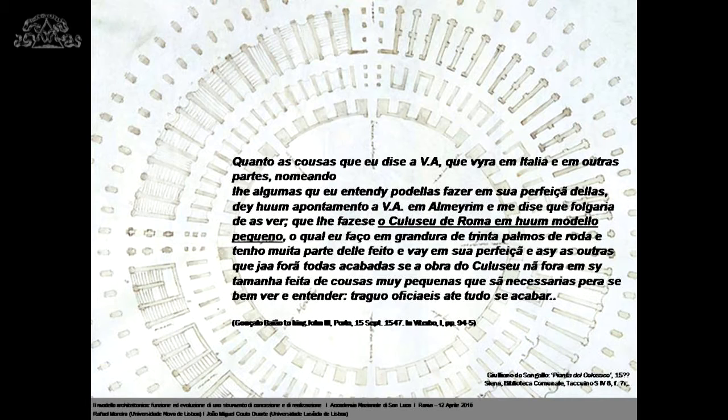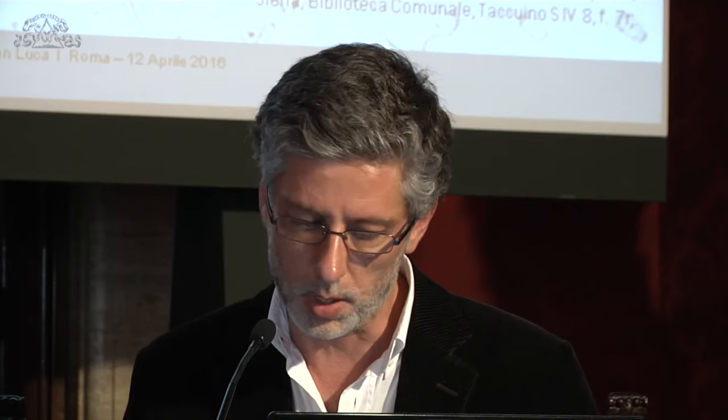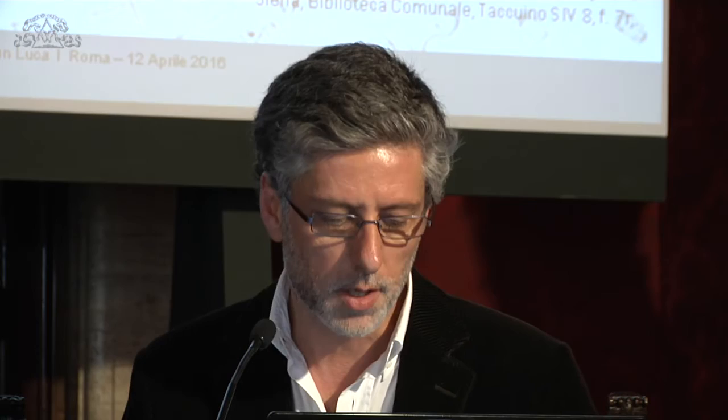In a 1547 letter to King João III, Baião says he is making the Coliseum in a small model, which he was doing in sixty palms wide — about 30 meters, 2 meters diameter. He wrote: 'I did a great part of it, and it goes on in its perfection as all the other scenes, which would already be finished if the work of the Coliseum wasn't that big, done with very small things necessary to be well done and understood.' It took five years to complete this model of the Coliseum. Guided by Carmona, Baião made in the 1540s some models of Roman monuments, mostly a huge one of the Coliseum. All were destroyed in the 1755 earthquake in Lisbon.